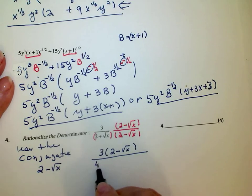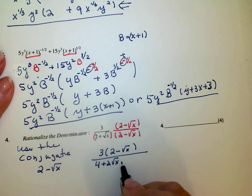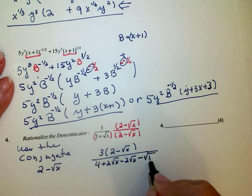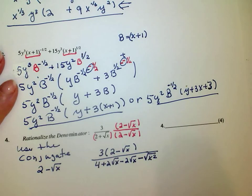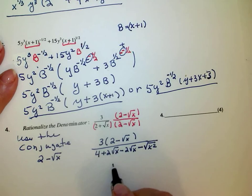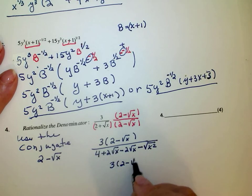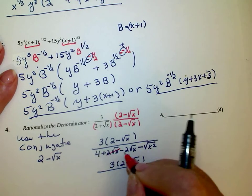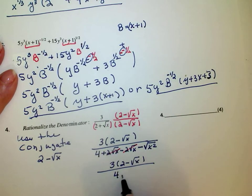Foil. 2 times 2 is 4. Inner is plus 2 square roots of x. Outer is minus 2 square roots of x. Last is the square root of x times the square root of x, which is the square root of x squared. So this is 3 times 2 minus the square root of x over, these add to zero, 4 minus square root of x squared is just x.